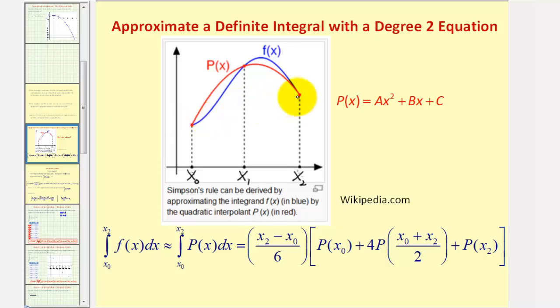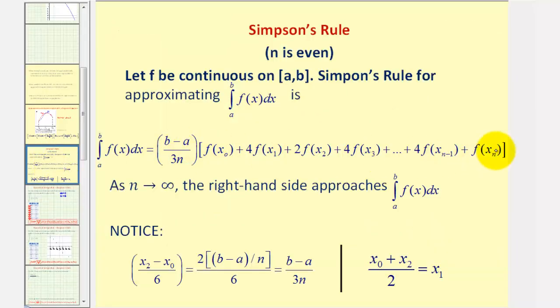So if we only had two sub-intervals, and we're using one quadratic function to make our estimate, we would have this formula here. But when using multiple intervals and multiple quadratics, we can show that it simplifies to this formula here, which I explained more in the lesson video.